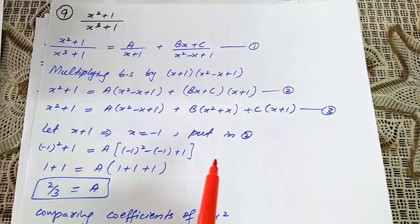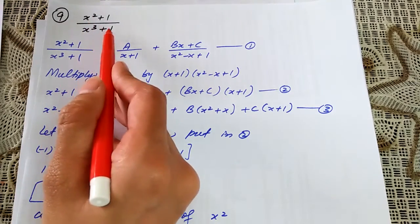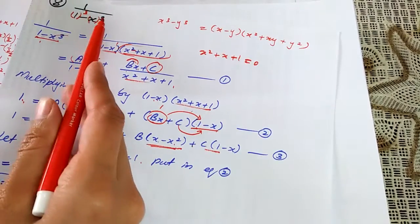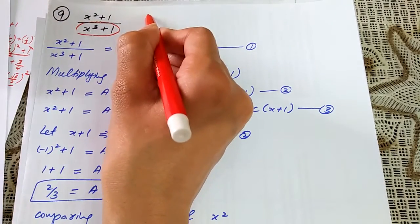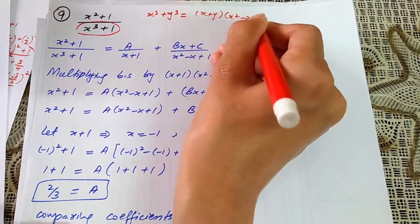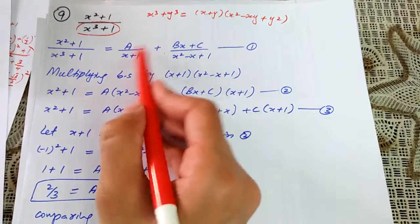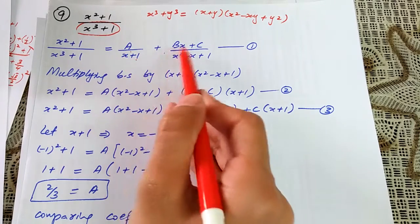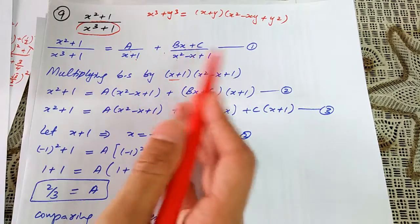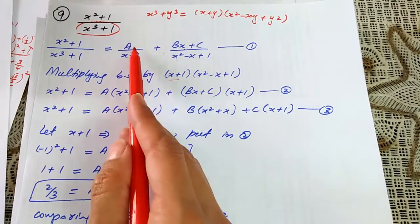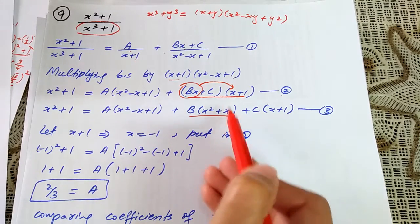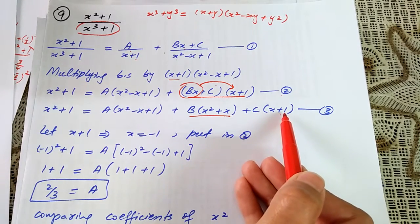Question 9: integrate (x² + 1)/(x³ + 1). This has the same partial fraction structure as the previous question, but with a plus sign instead of minus. Using the formula x³ + y³ = (x + y)(x² - xy + y²), factor x³ + 1 = (x + 1)(x² - x + 1). Separate into partial fractions: a/(x + 1) + (bx + c)/(x² - x + 1). Multiply both sides by the whole denominator and cancel terms.